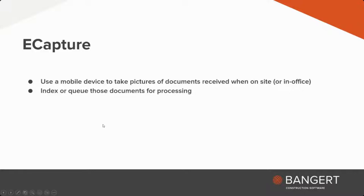There's also eCapture, which is probably my next favorite of the ePortal applications. eCapture allows you to take a mobile device and take a picture of a document. Most commonly, I see this used for credit card receipts, sometimes invoices that are received on the job site. A handful of my clients also use it to take a snapshot of a receiving ticket or purchase orders as they're issued. With eCapture, you can use that mobile device to input some basic coding or just send it to a queue for the AP specialist or AP clerk to do the coding on.